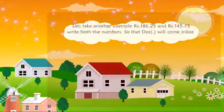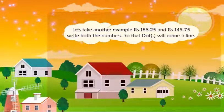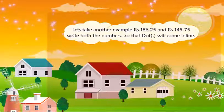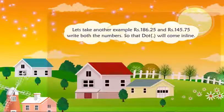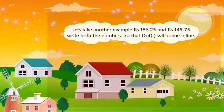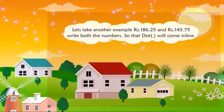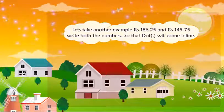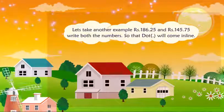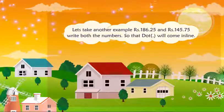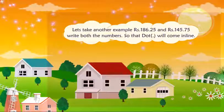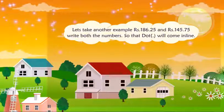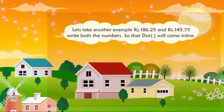Let's take another example. Rupees 186 and 25 paise, plus rupees 145 and 75 paise. Write both numbers so that the dot comes in line, then add.